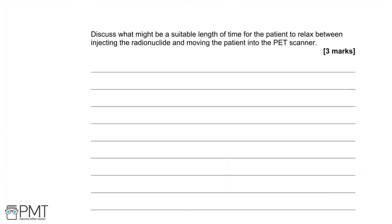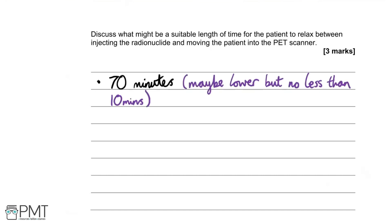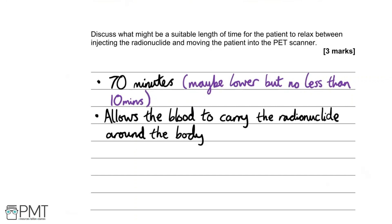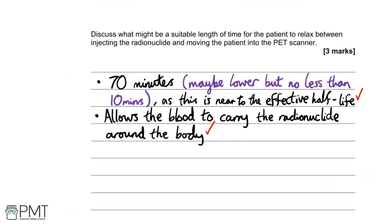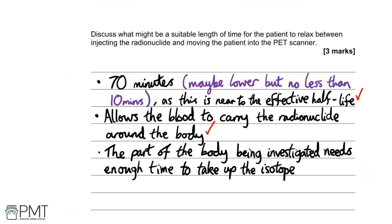Discuss what might be a suitable length of time for the patient to relax between injecting the radionuclide and moving into the PET scanner. Given the effective half-life is 70 minutes, a suitable time would be up to 70 minutes — any longer and too much radionuclide would be gone. But no less than about 10 minutes, to ensure the radionuclide moves around the body enough to reach where it needs to go. The first mark references the 70-minute half-life; the second mark discusses what that time allows; the third mark addresses the organ needing enough time to use up the isotope. Three marks.